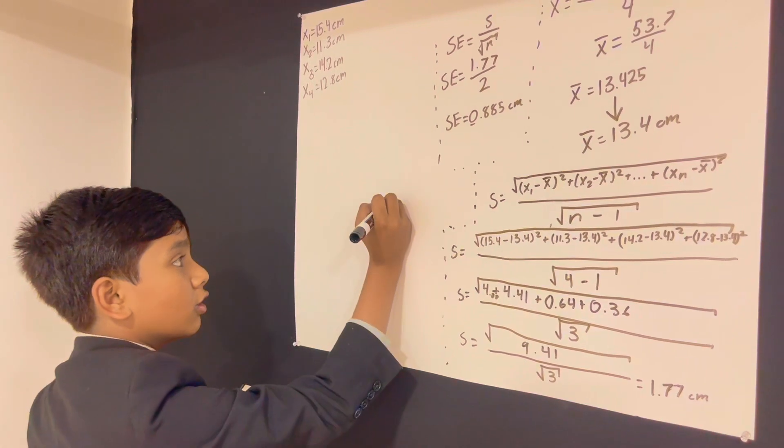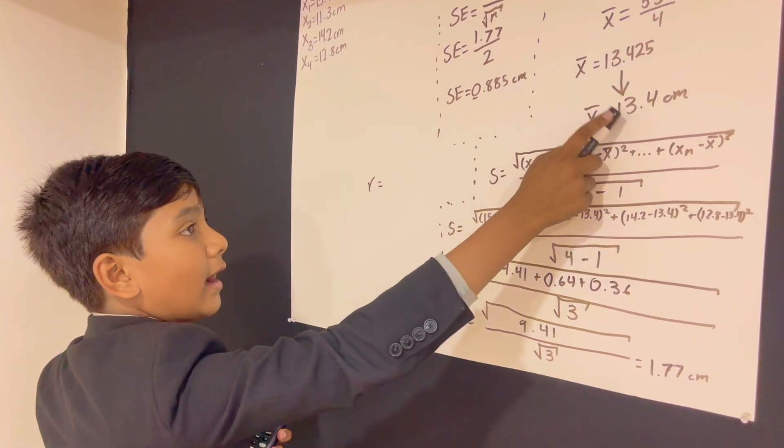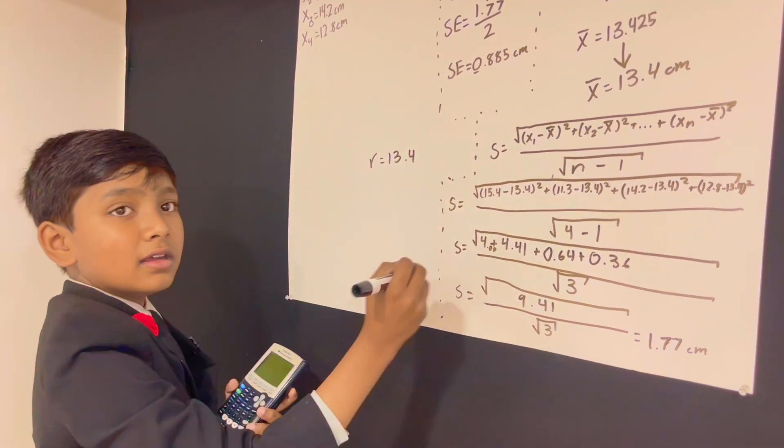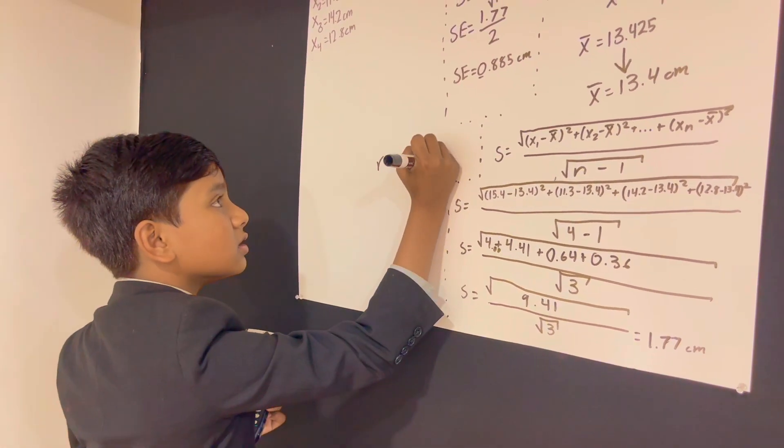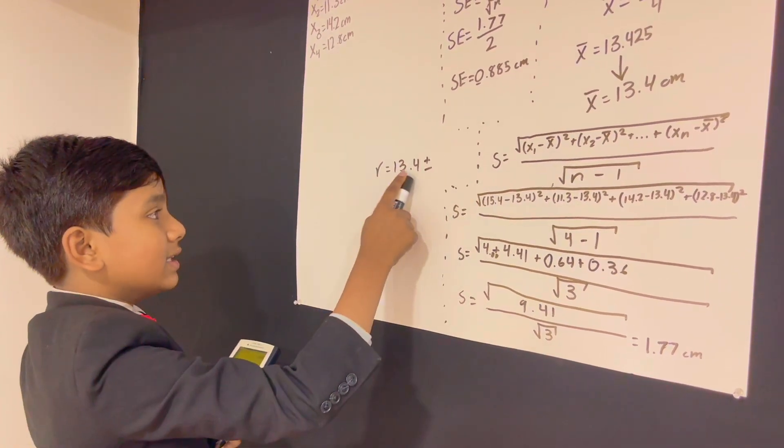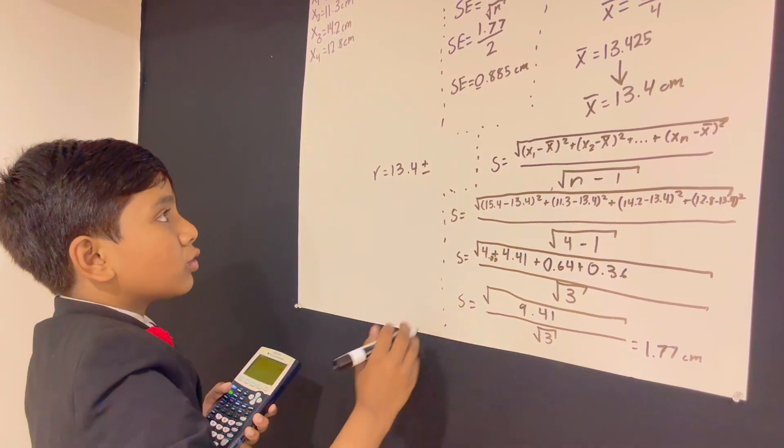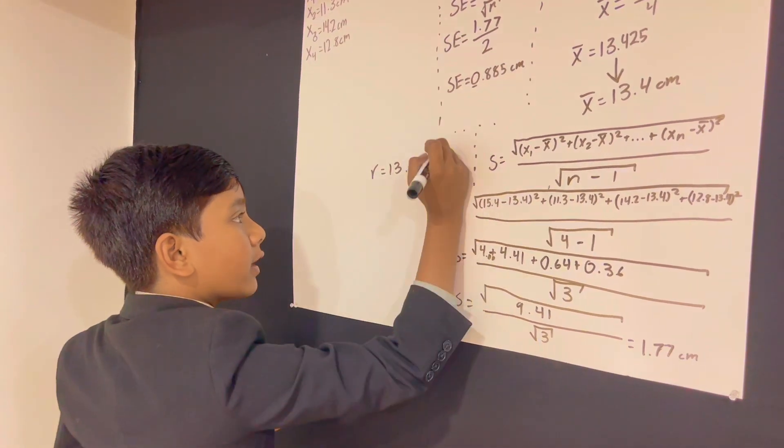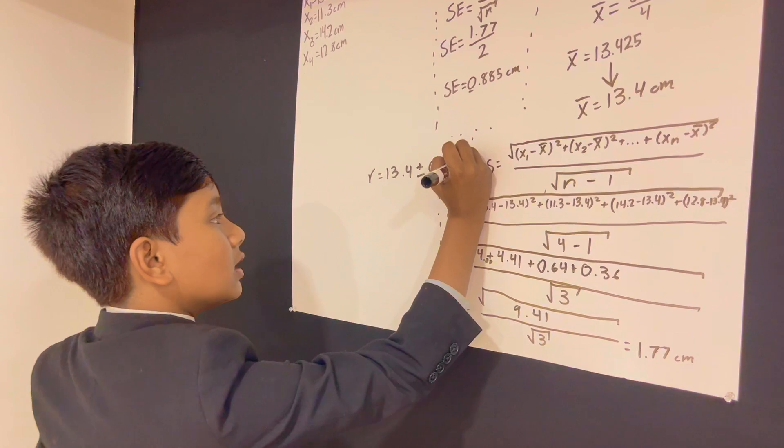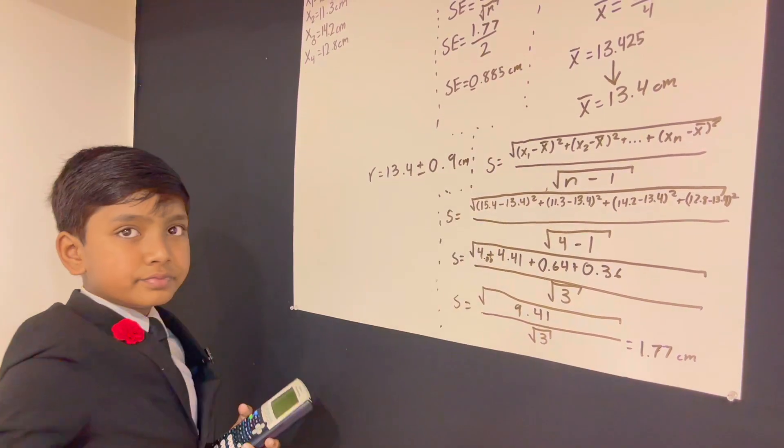Radius is equal to, we have 13.4 as our mean, plus minus, well, 0.885, but we can only go up to the least accuracy with adding or subtracting. We're gonna have to round this up to 0.9 cm.